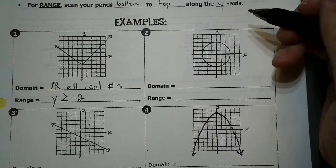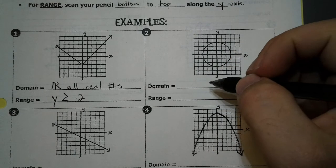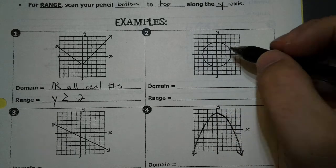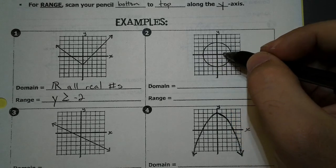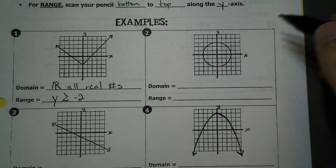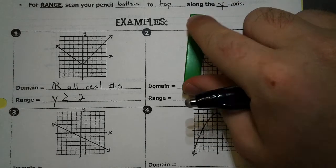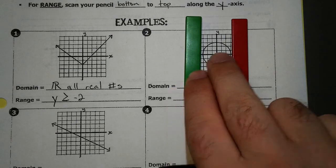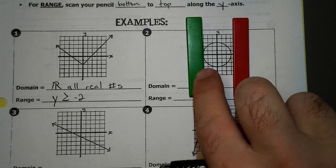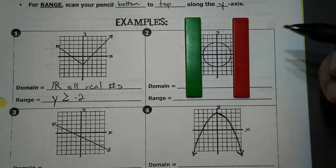Good. Now let's look at number two. For the domain, we just look at the x-values. So scan left to right. Scanning on the left, this is where it starts. Scanning to the right, this is where it stops. If it helps, what you can do when you're doing domain or range is get two little tiles or two pieces to just look left and right.